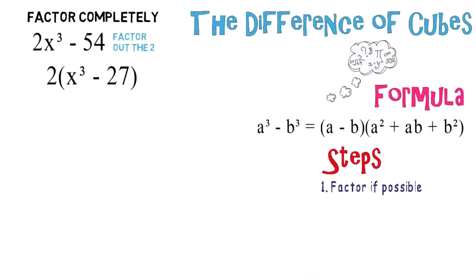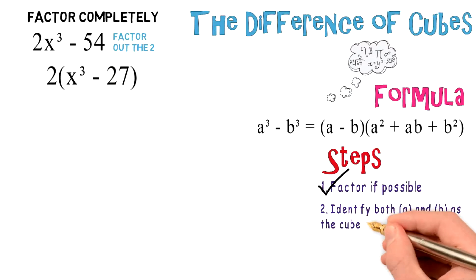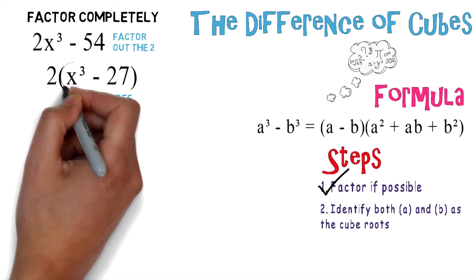Now we can check off the first step and move on to the second step, which is to identify both a and b as cube roots. So x to the third power and negative 27 are perfect cubes.